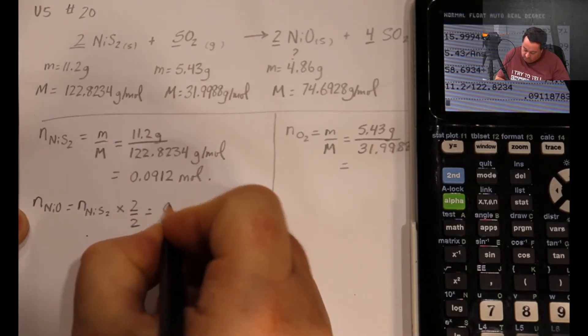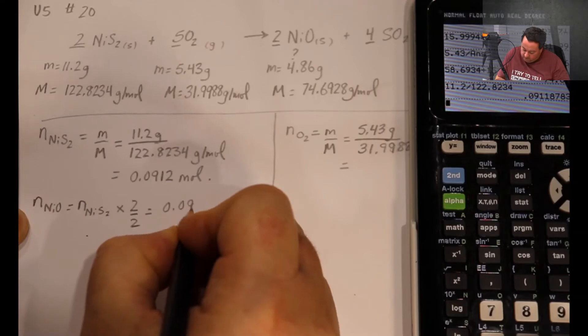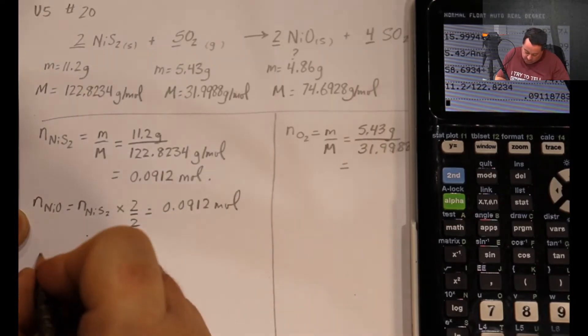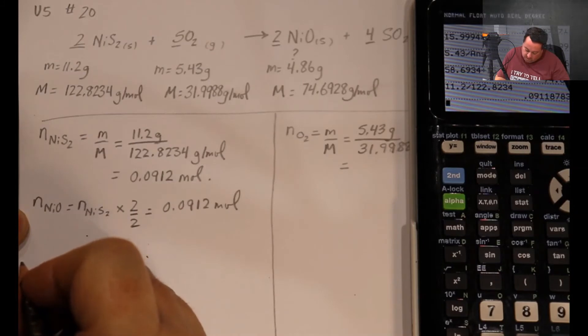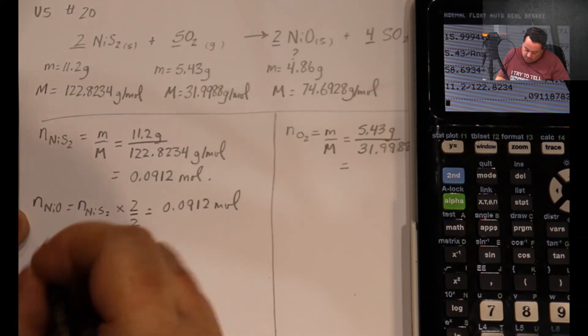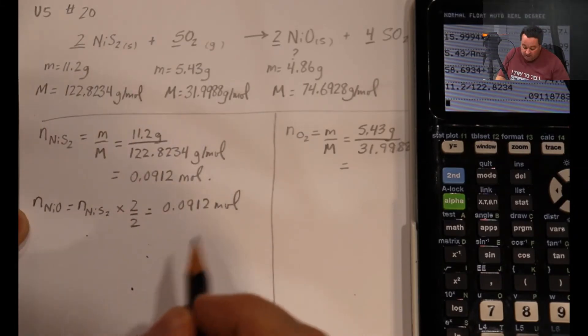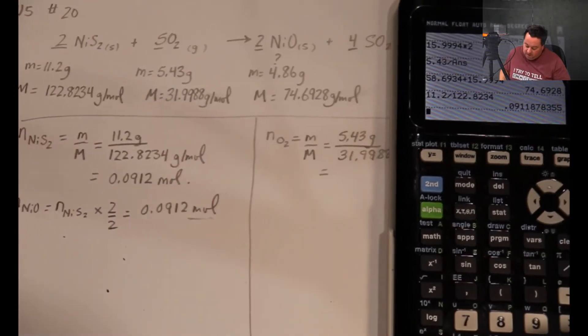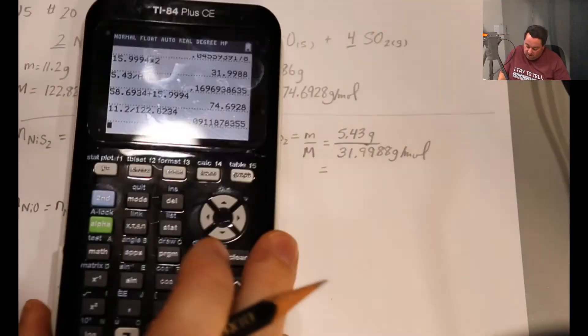So 0.0912 moles, no change. And then we're going to try something a little bit different from the last video. I'm not going to convert this to a mass yet. We'll see which one we need to work to completion. It'll save us a little bit of time.